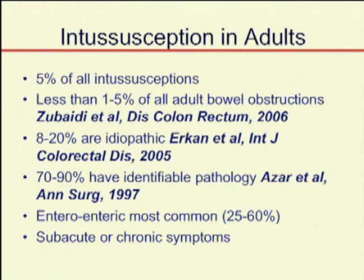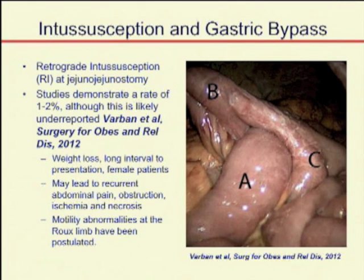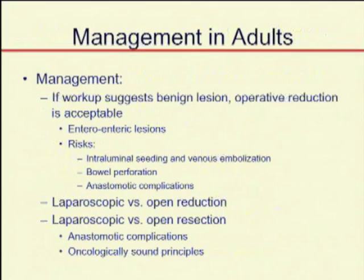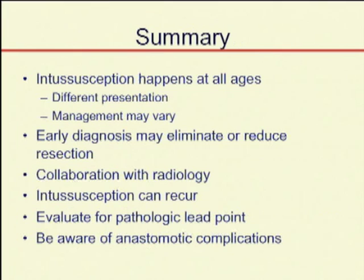The take-home message in adults is to resect. There are also cases of intussusception after gastric bypass, which I'll leave to our gastric bypass surgeons. Recommendations in adults: probably resect, especially in colocolic lesions or any lesions involving the colon. Keep in mind your heightened awareness for ischemia at the edges and the potential for anastomotic complications.